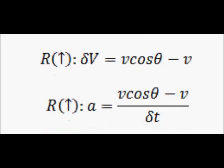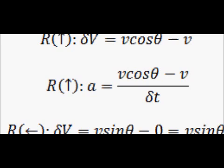We can derive an acceleration simply by dividing the equation through by a change in time. So the acceleration in the vertical direction is equal to V cos theta minus V over delta t.